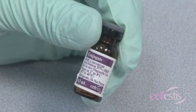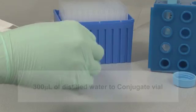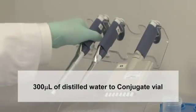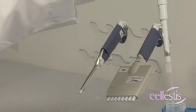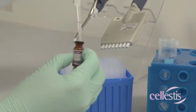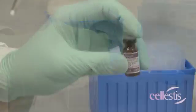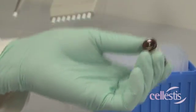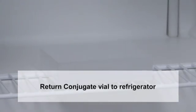For the conjugate, add 300 microlitres of distilled water to the vial and mix gently to avoid frothing. The conjugate vial should be immediately returned to the refrigerator.